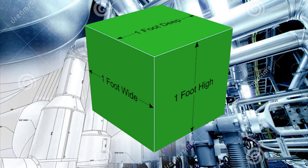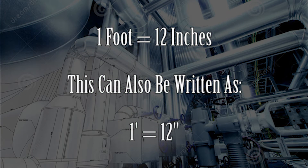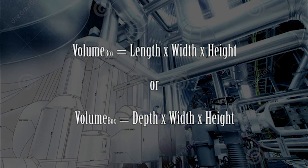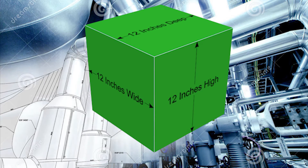Now I have a 1 cubic foot box. What this doesn't tell me though is how many cubic inches are actually contained within it. In order to understand this, we need to understand that there are 12 inches in each foot. So let's take my box and put these new dimensions on it. I'll have a box that is now 12 inches by 12 inches by 12 inches. Now let's do the math. Remember, to calculate the volume of a box is length times width times height. So my width is 12 inches, my height is 12 inches, and my length or depth is 12 inches.